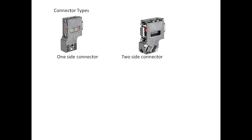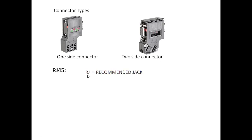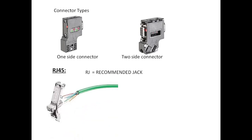You can see green and red wires — A1, B1, A2, B2 — for extension. This is about connector types used in Profibus communication.